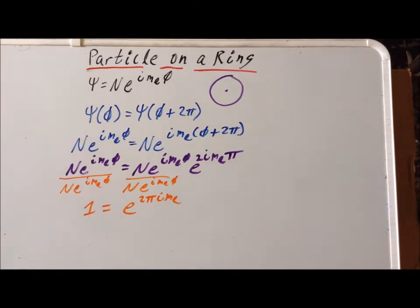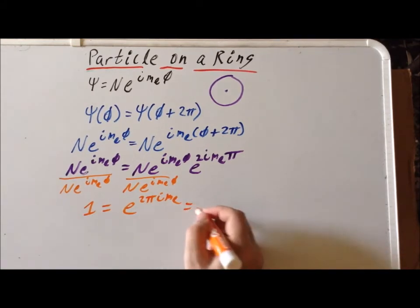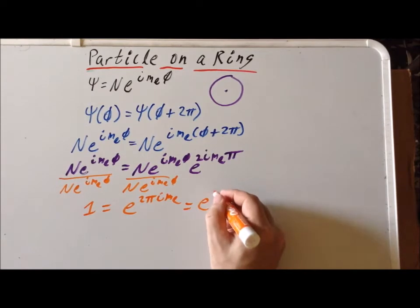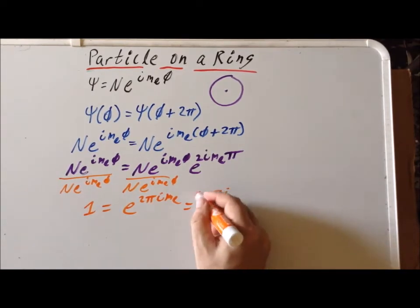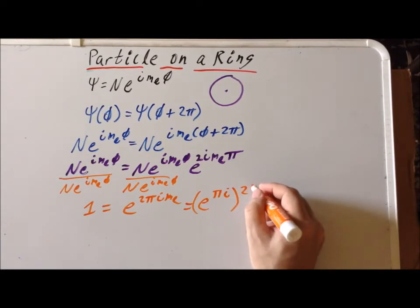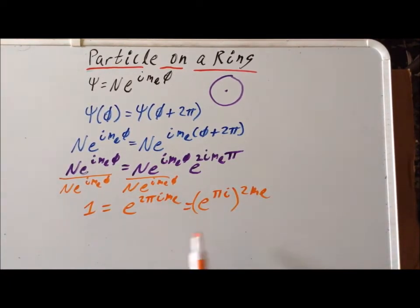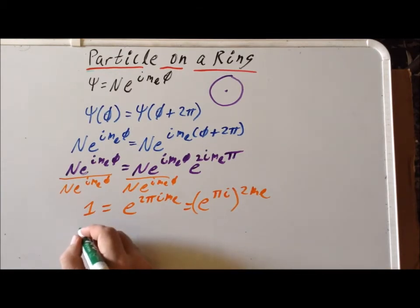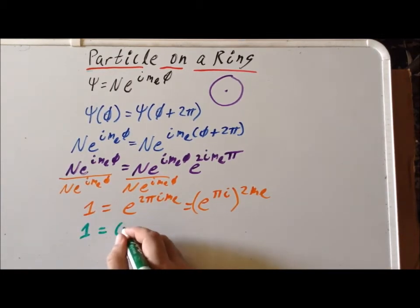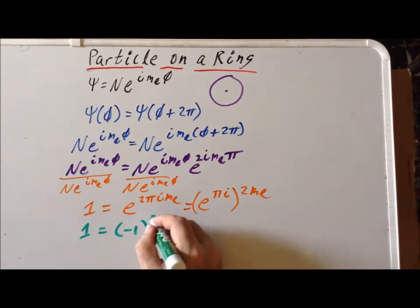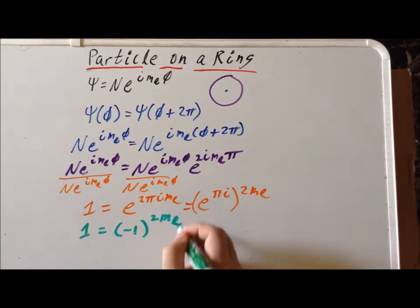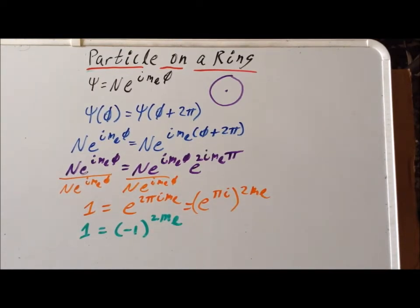But I can also rearrange the factors on the right-hand side to use the following fact. I know I can write it as e to the pi i to the 2 m sub l power. So I'm simply rewriting the exponent here to put the pi i as close to e as possible. And the reason why I'm doing that is we recall from several videos back that e to the pi i is equal to minus 1. So it tells us that 1 is equal to minus 1 to the 2 m sub l power.